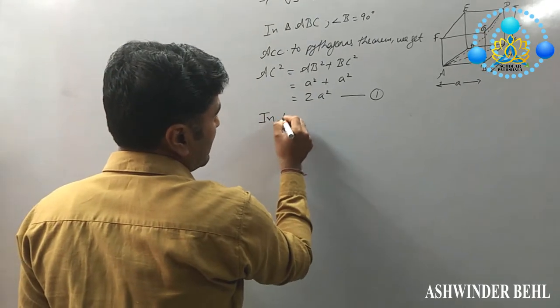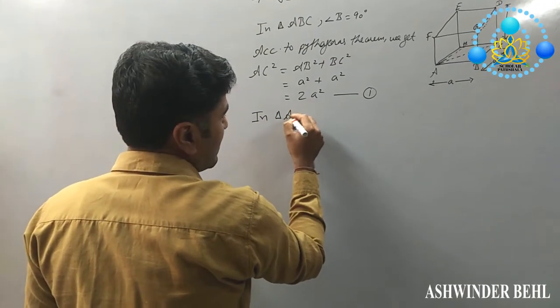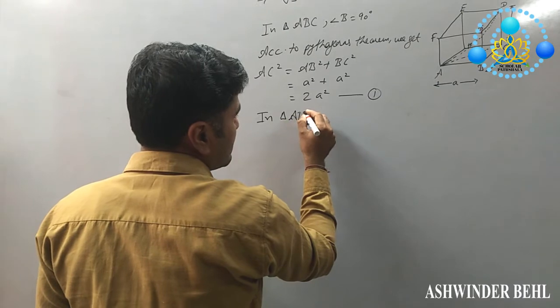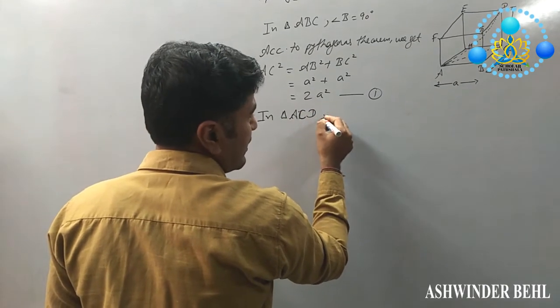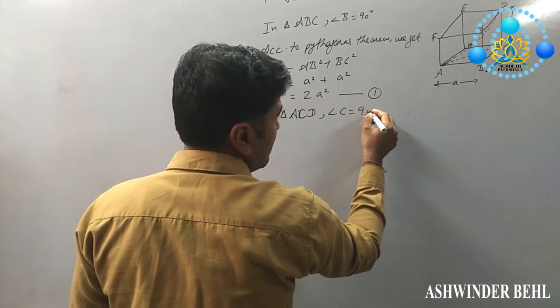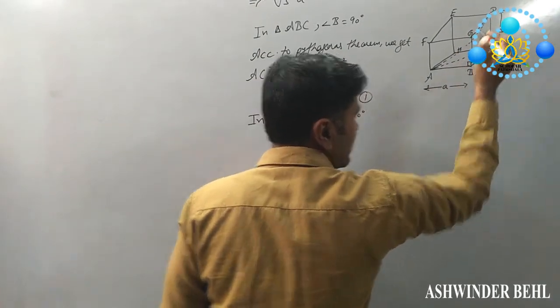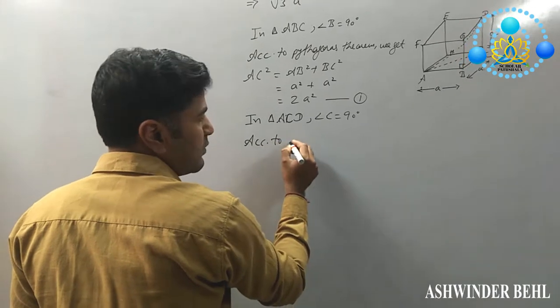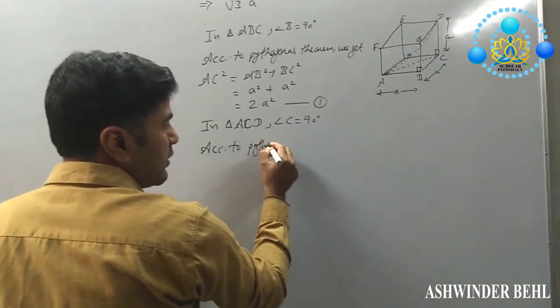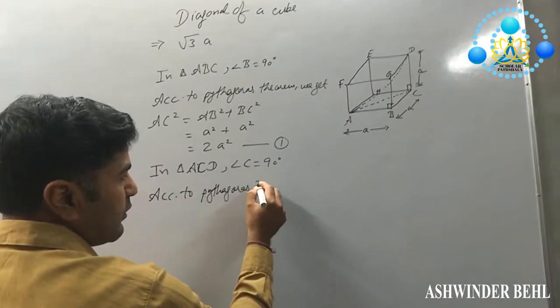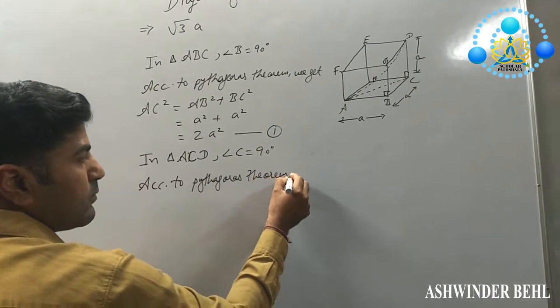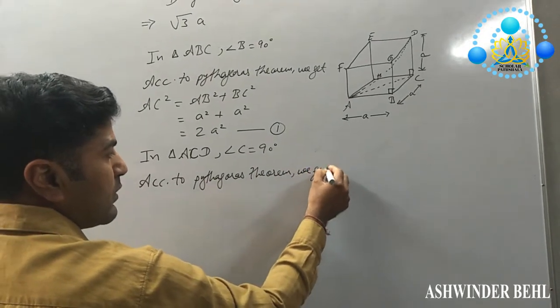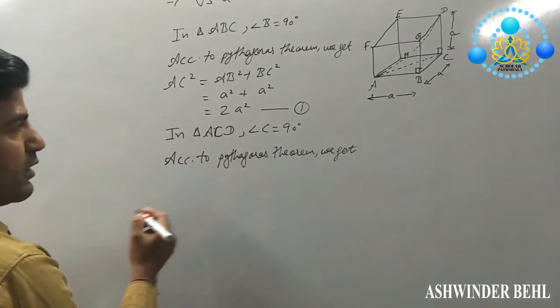In triangle ACD, angle C is equal to 90 degrees. Same as, according to Pythagorean theorem, we get it here.